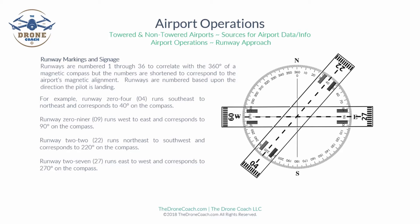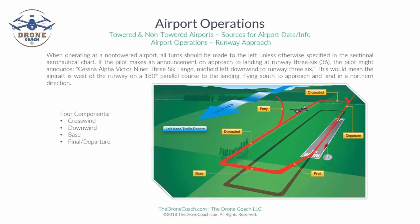Runway 04 corresponds to 40 degrees. Runway 09 runs west to east and corresponds to 90 degrees on the compass. Runway 22 runs northeast to southwest and corresponds to 220 degrees on the compass. Runway 27 runs east to west and corresponds to 270 degrees on the compass. That's how you get runway numbers.